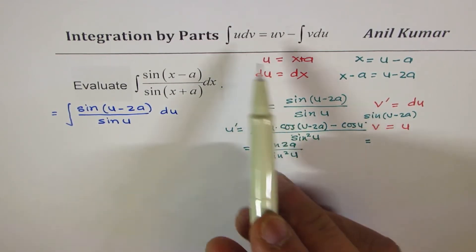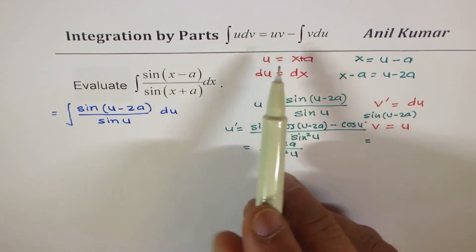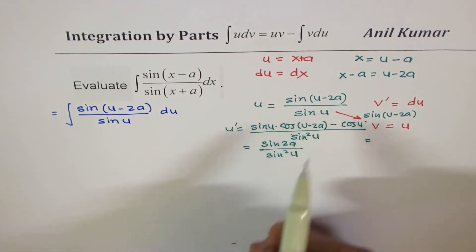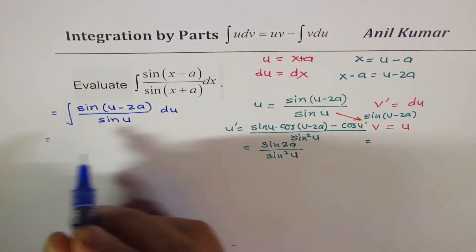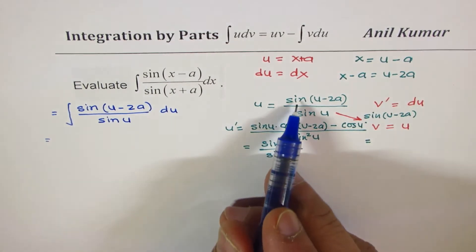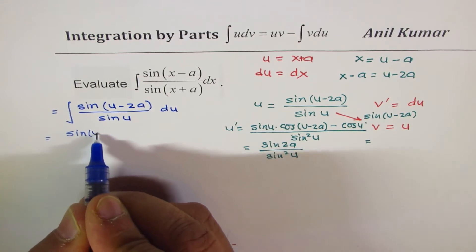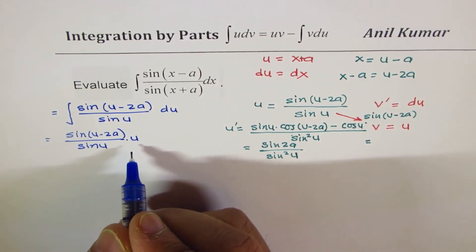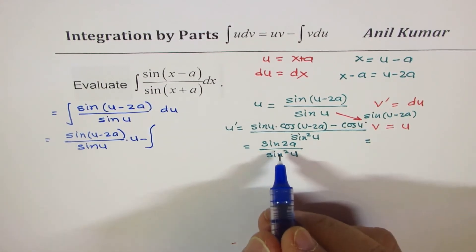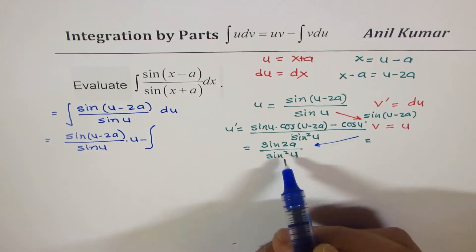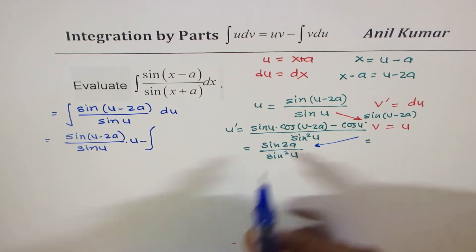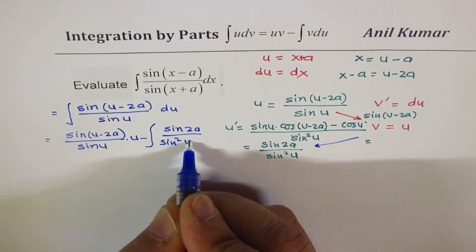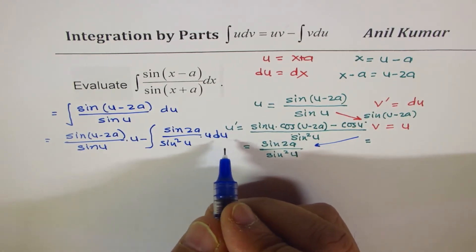Now we are going to apply integration by parts. So you could write this as uv—that is these two things. I could write this as sin(u-2a) over sin(u) times u. So you get the first part here, take away the integral of the derivative. So now we will do this and this. We can combine these two now, so we get sin(2a) over sin²(u) times u du.